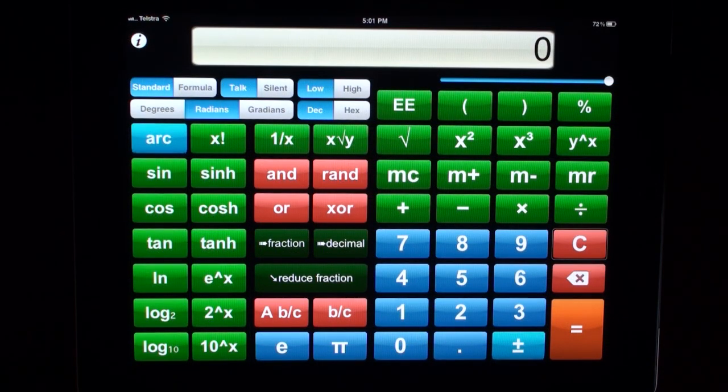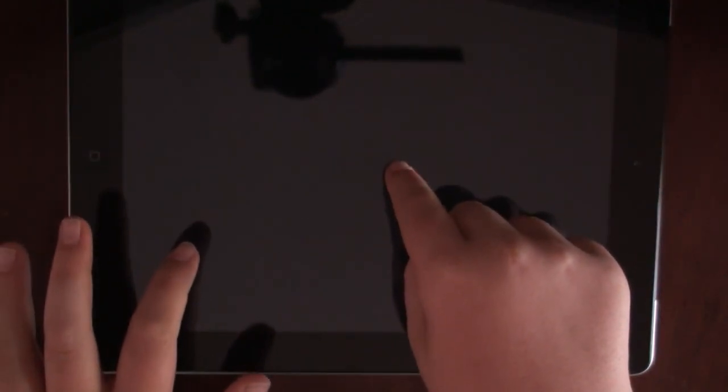This is how to perform a calculation using voiceover. We are going to perform the sum of 1 plus 2 while having the screen dimmed so that we cannot use sight. Screen curtain on.